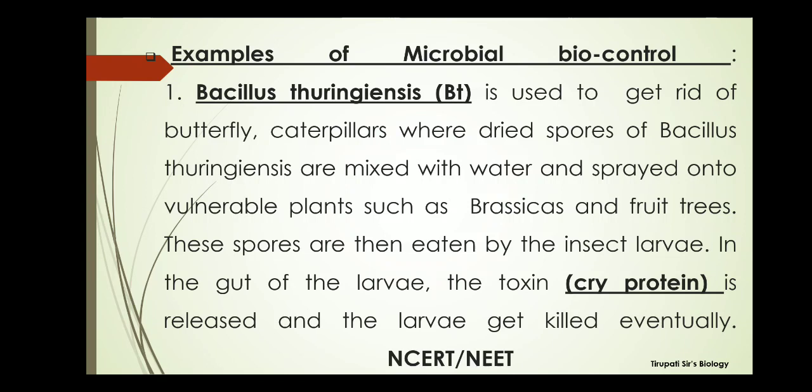An example of a bacterial biocontrol agent is Bacillus thuringiensis. It is a bacterial microbe that fights butterfly caterpillars. Bacillus thuringiensis is mixed with water and sprayed on plants and the ground. When insect larvae ingest these spores, a protein called cry protein is released from the gut. The cry protein is toxic and the larvae will die.